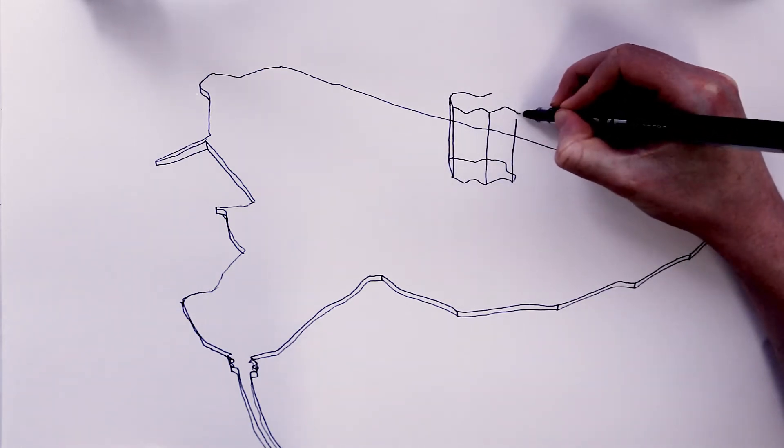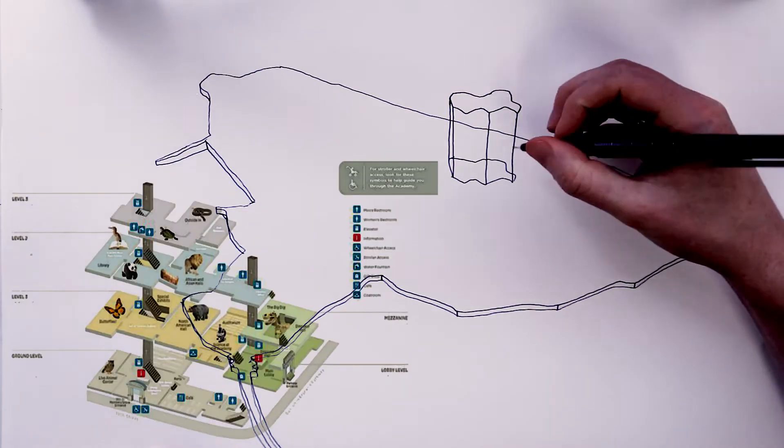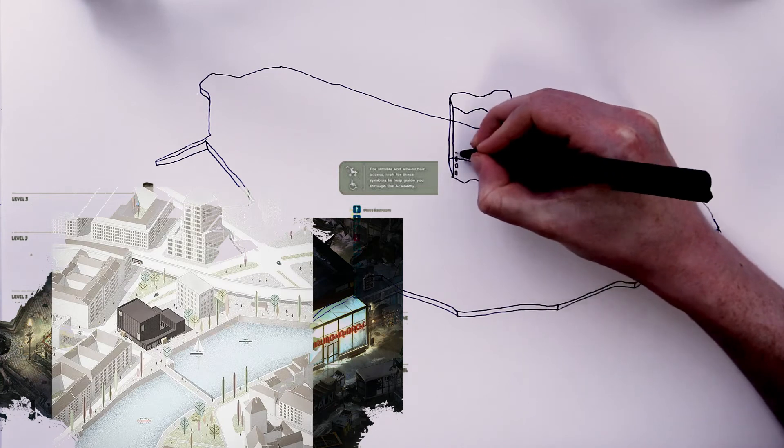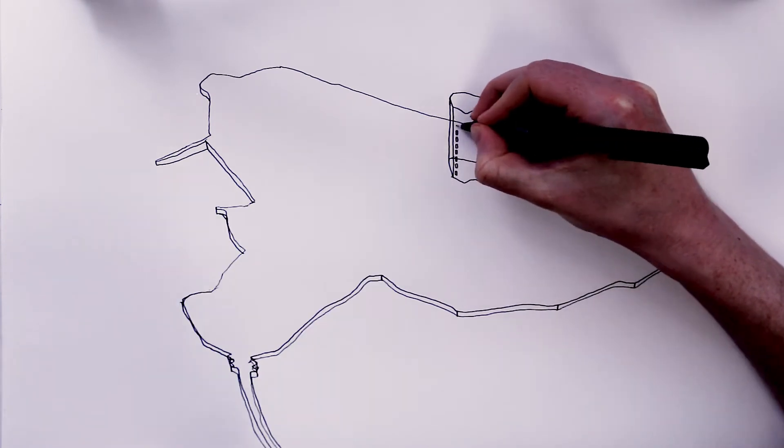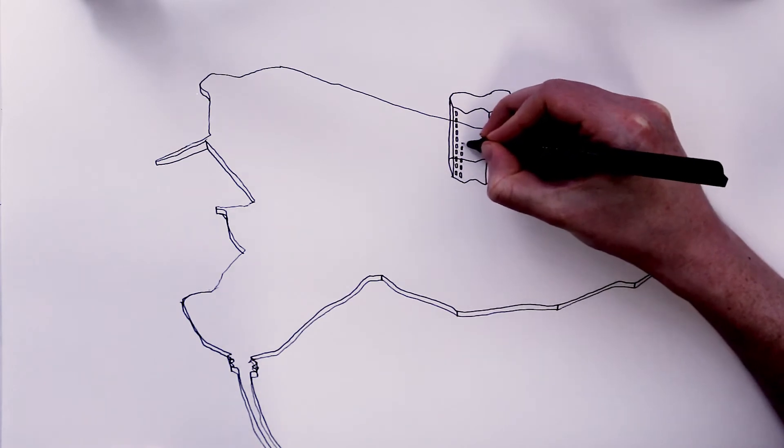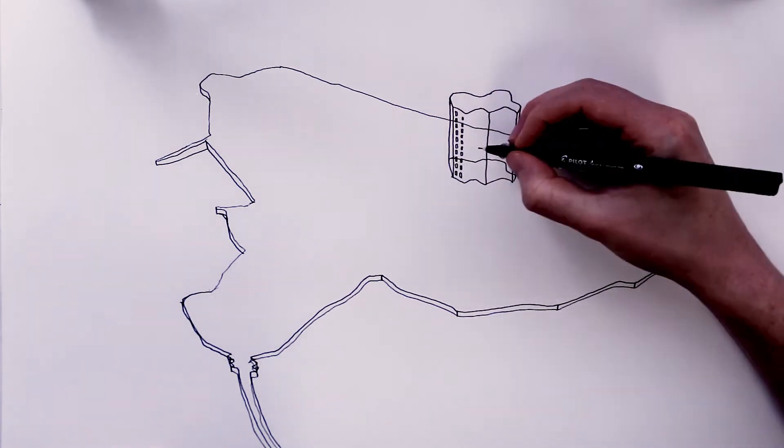You might be familiar with the axonometric view from museum floor plans, video games, or architectural proposals on hoardings outside building sites. Doing this kind of exercise helps me to think about the political and emotional dimensions of this familiar kind of image.